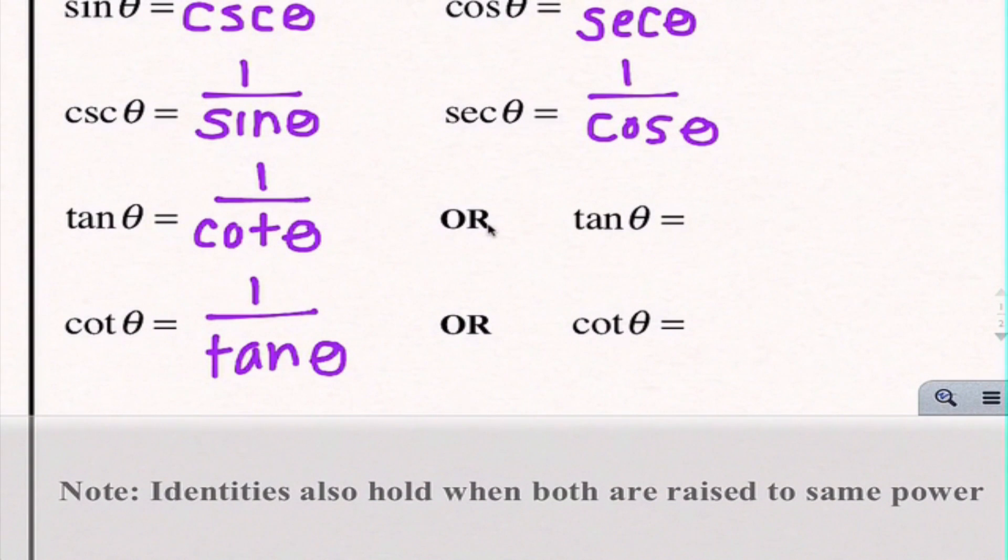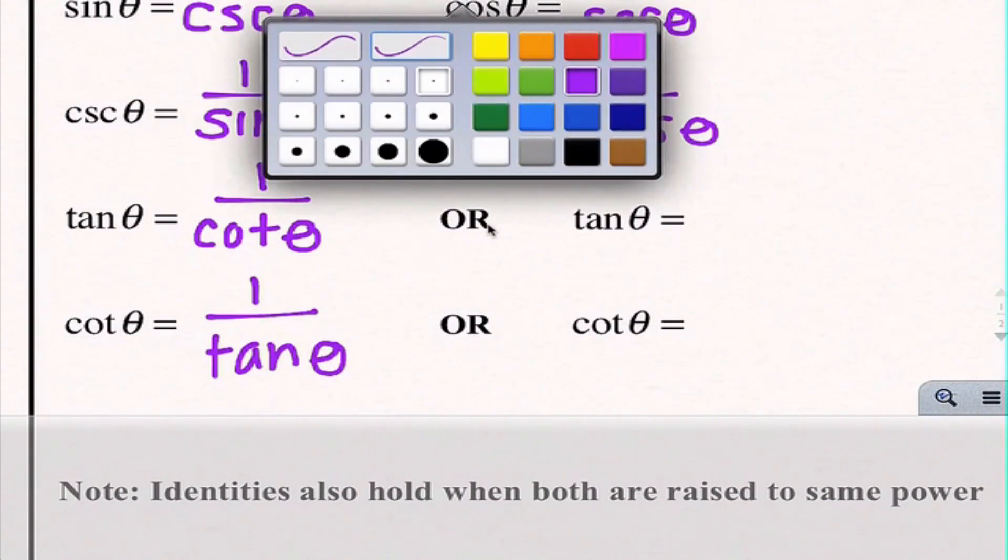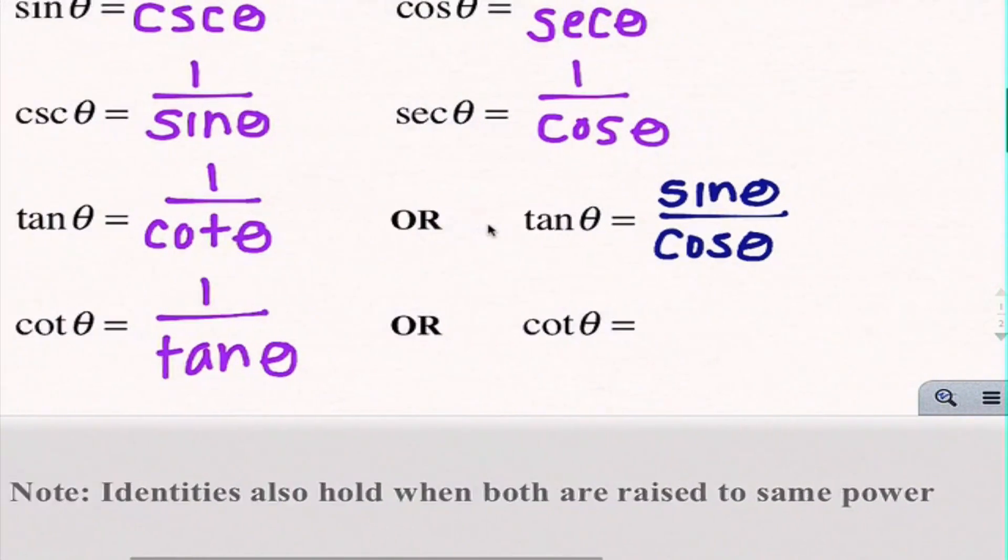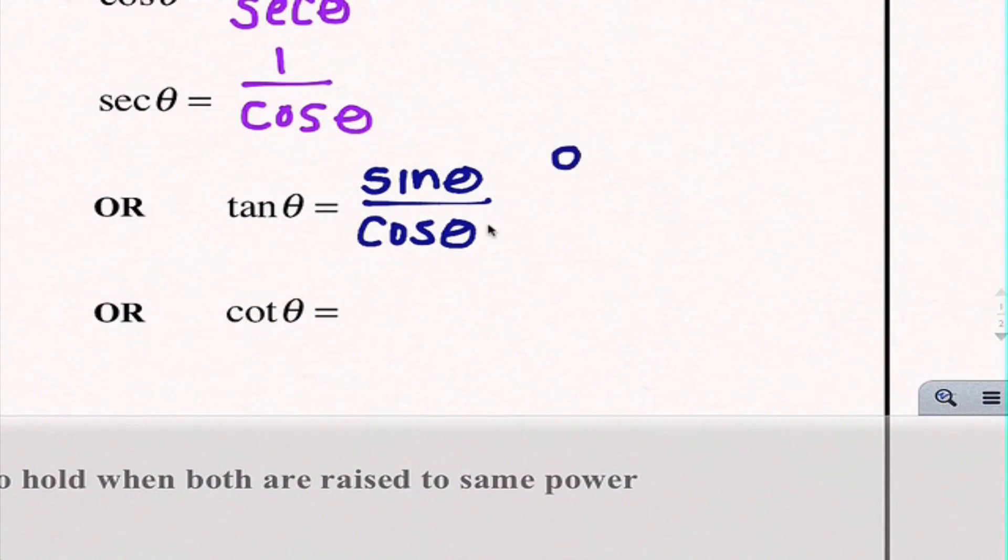You may notice that we have another blank for tan and cotangent. So tangent is also equal to sine of theta over cosine theta. And I want to take a moment to talk about that. We've learned previously that sine is opposite over hypotenuse and cosine is adjacent over hypotenuse. So when I divide by a fraction I am multiplying by the reciprocal. I have opposite over hypotenuse times hypotenuse over adjacent. My hypotenuses cancel out and I'm left with opposite over adjacent, which is the ratio for tangent.